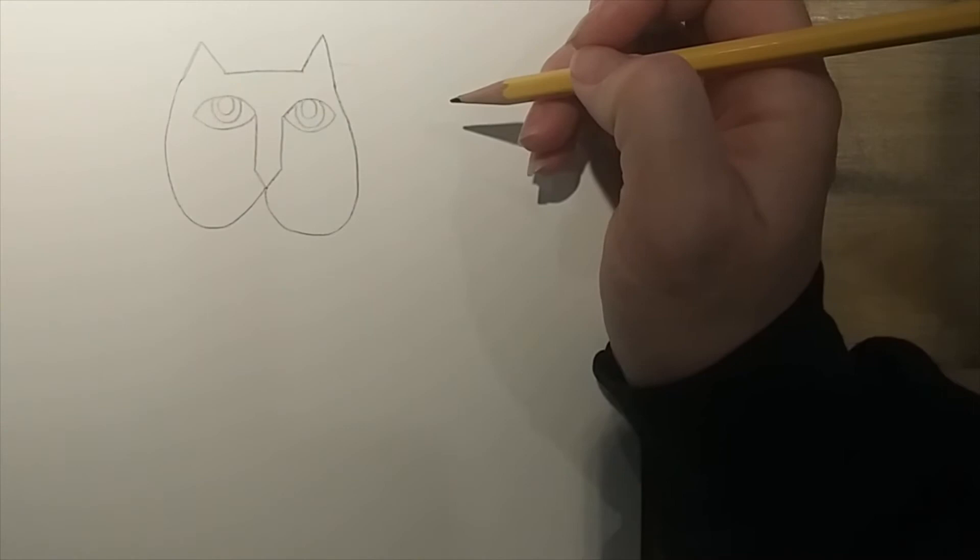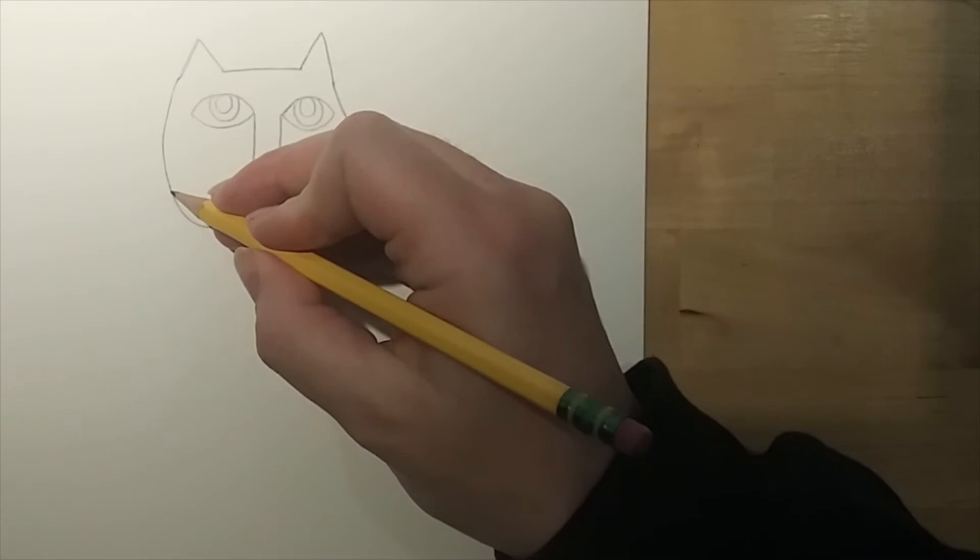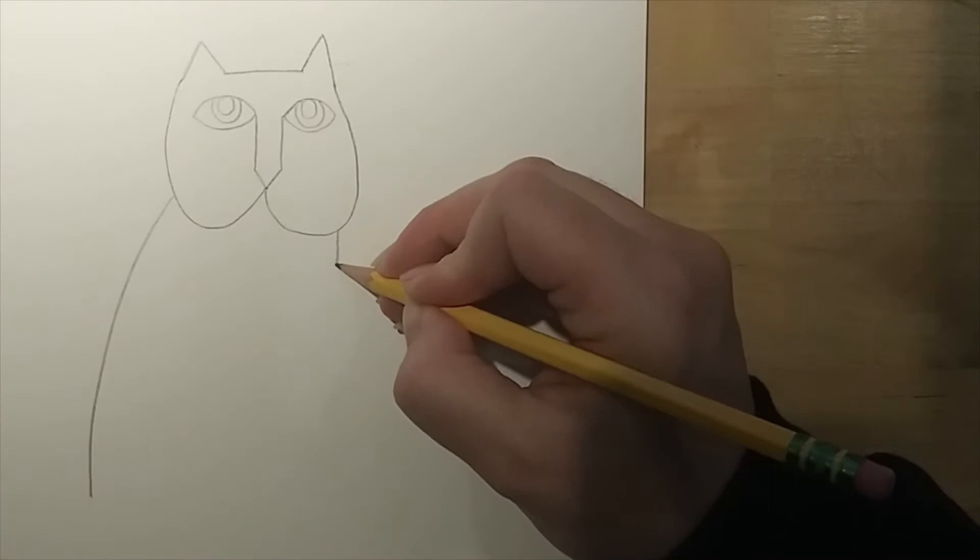Then what we're going to do is we're going to draw our cat's body and we want our cat to just be kind of sitting on his rear end. So I'm going to make, and you can go on this side or the other side, I'm going to make a curved line that goes down and that's going to be where his rear end is. And then I'm going to make a straight line on the other side. So this side kind of looks like his back and this side is going to look like his front and then join those two lines together with a curved line like that.